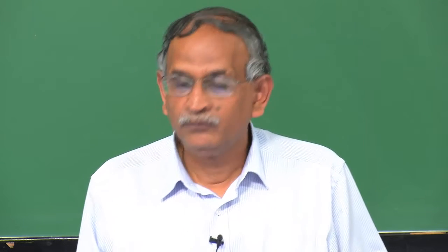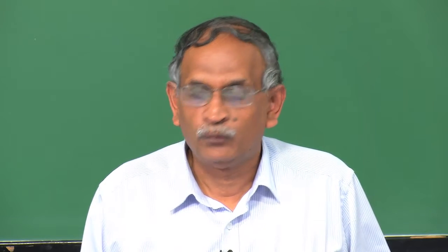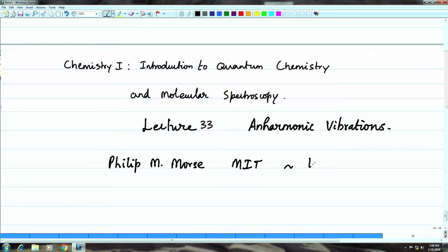Welcome back to the lectures on chemistry and introduction to molecular spectroscopy. We shall continue from harmonic vibrational spectroscopy of a diatomic molecule to look at one model for anharmonic vibration. This model is due to Professor Philip M. Morse from MIT around 1929. He proposed that molecular vibrational motion is anharmonic, eventually leading to dissociation for very large vibrational quantum numbers.